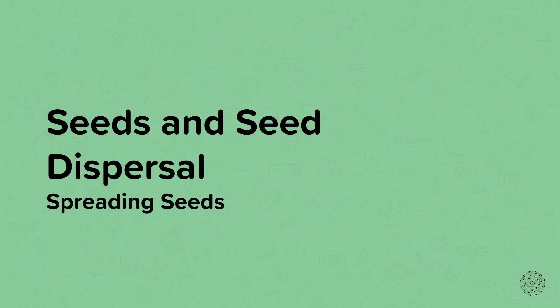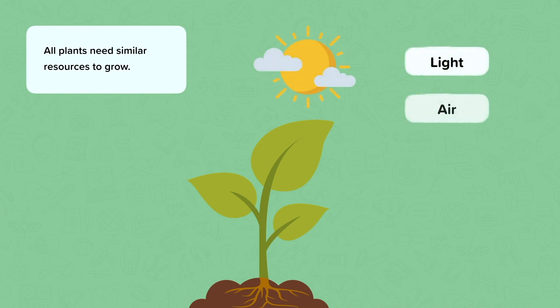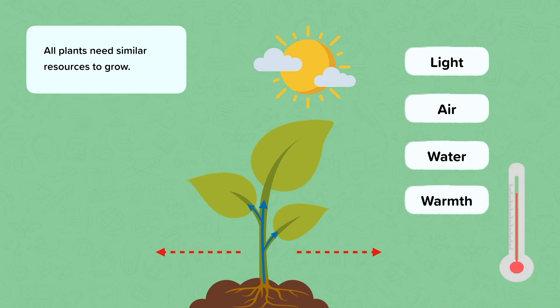Spreading seeds. All plants need similar resources to grow. Do you remember what these things are? Plants require light, air, water, warmth, and the space to grow. Without these things, the plant will not grow well and may even die.